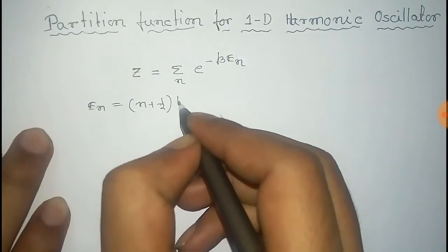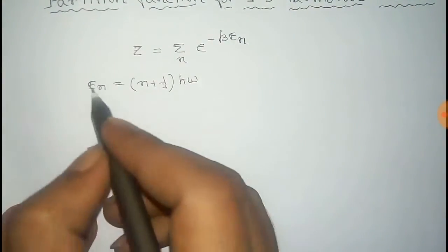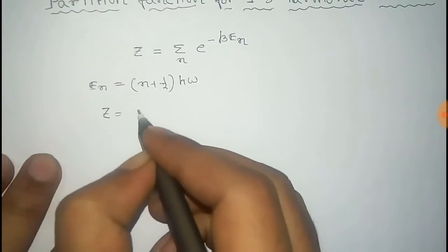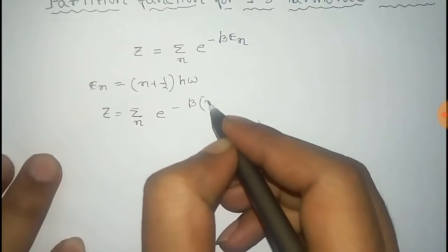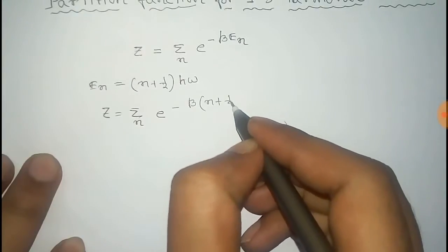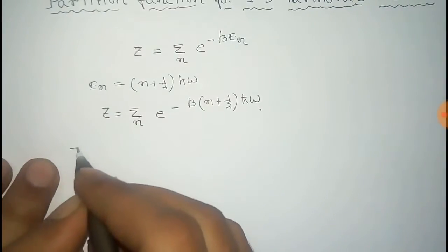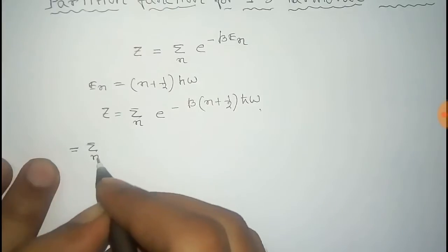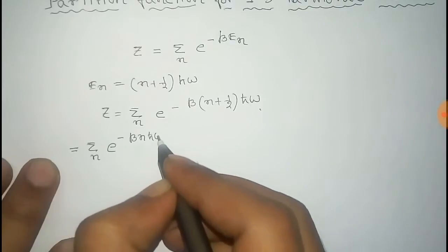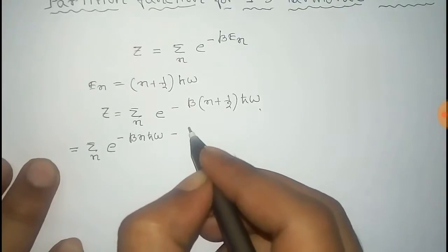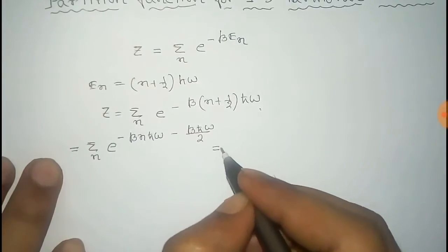Now we put this value of E_n into the expression for Z. It becomes Z equal to sum over n of e to the power minus beta times (n plus one-half) times h-bar omega. We can write this term as e to the power minus beta times n times h-bar omega, minus beta times h-bar omega over 2.